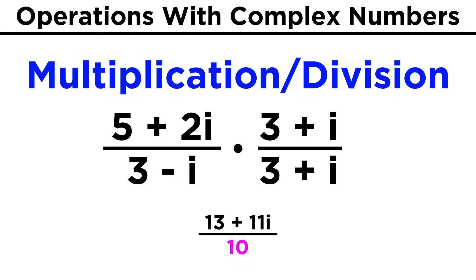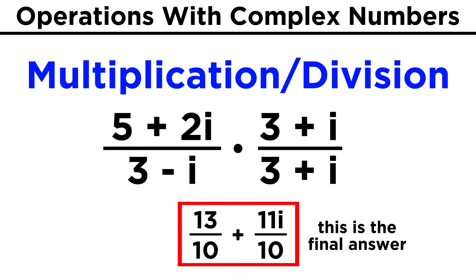Then we can just express this in standard form by splitting it up into two fractions, thirteen over ten, plus eleven i over ten. And even though it's a little messy, that's the way we divide complex numbers.